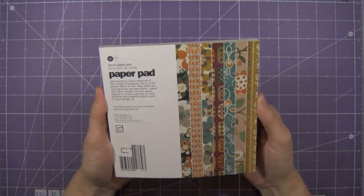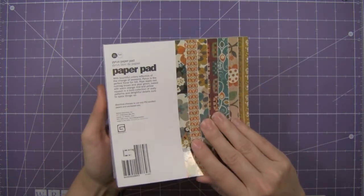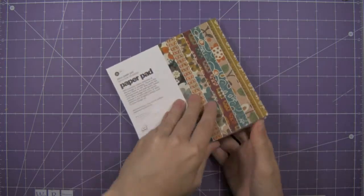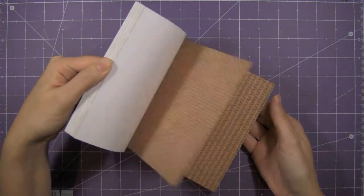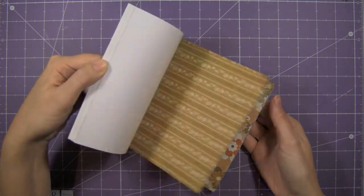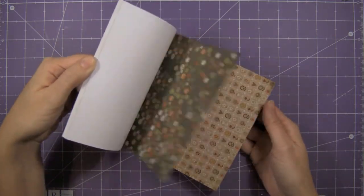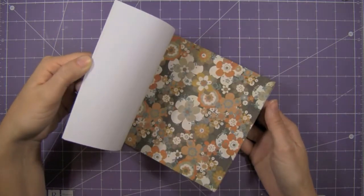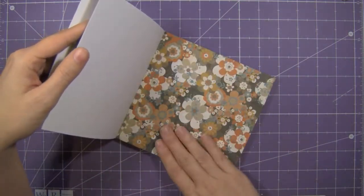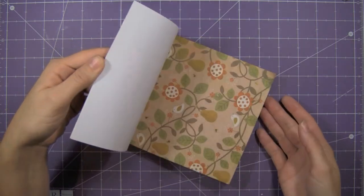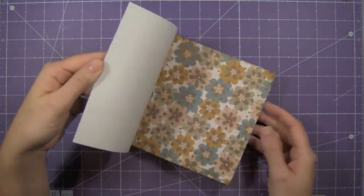And then the last thing I want to show you is Basic Grey, another love of mine, 6x6 pad. This is the Pyrus paper pad, and I love the fall colors that are in here. I will be using this a lot. This one just came in the mail, so I haven't been able to break into it, but I love these colors, this one, and above grey, so I like the grey tones that are in here, and again, craft friendly, which I love.